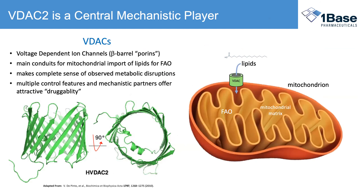The other finding I want to add more depth to is the one target identified as central in all of this: a VDAC, a voltage-dependent ion channel. These are beta-barrel porins. Just look at the structure on the left — this looks like it is a flow valve, and that's what it does. It is the main conduit for import of lipids into mitochondria, and this makes complete sense of the biology explained in this paper. There are multiple complex mechanistic partners and control features of this protein. This is one example of something we can exploit — a regulatory flow valve — to regulate lipid import into the mitochondria and thus achieve our therapeutic objective.